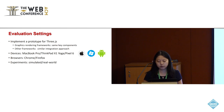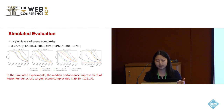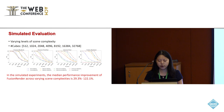Our experiments are divided into simulated experiments and real-world scenario experiments. We conduct simulated experiments to test the performance of Fusion Render under various levels of scene complexity. We progressively increase the number of rendered cubes and measure performance across existing frameworks. Fusion Render demonstrates a median rendering performance improvement of 29.3% to 122.1% compared to the existing optimal baseline.